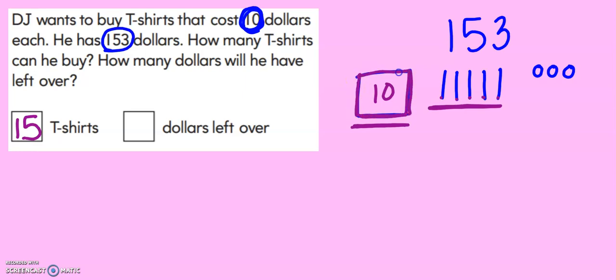This one hundred is also the same as 10, 20, 30, 40, 50, 60, 70, 80, 90, 100. I can think of it as ten tens in that one hundred. And then, how many does he have left over here, second grade? Three left over. Great job. So he can buy 15 t-shirts with $3 left over.